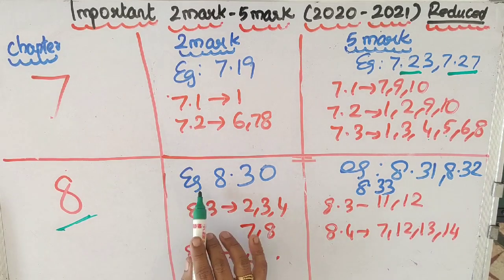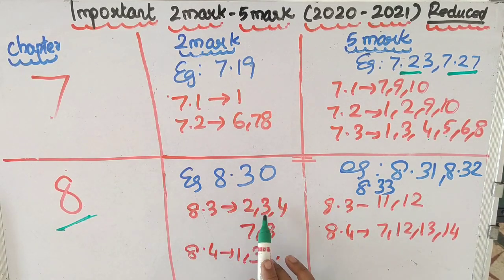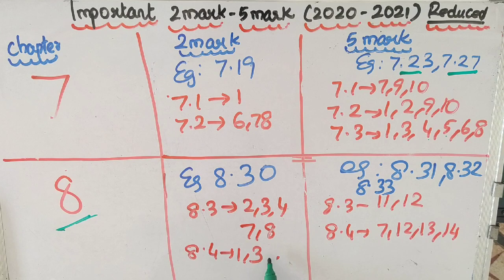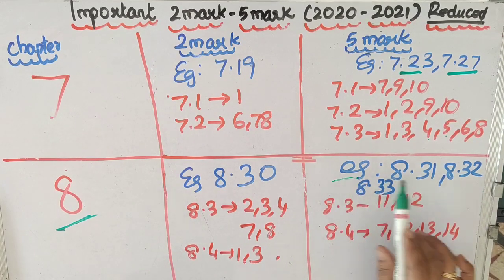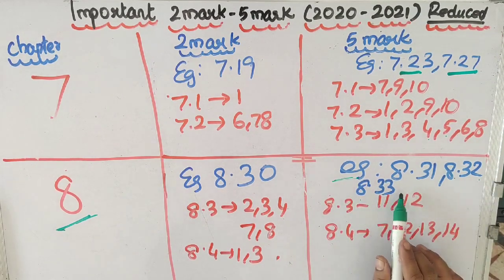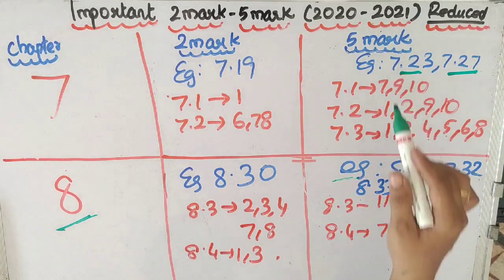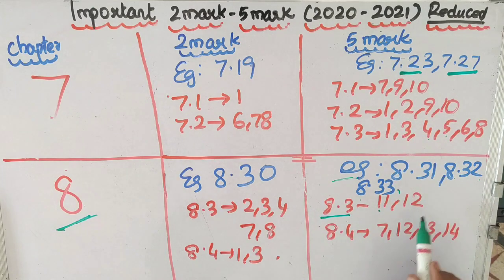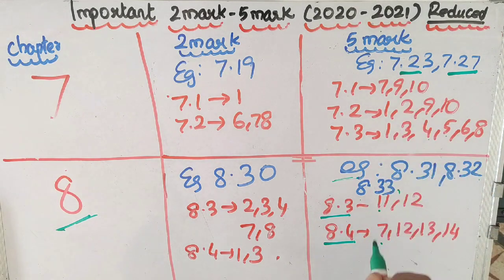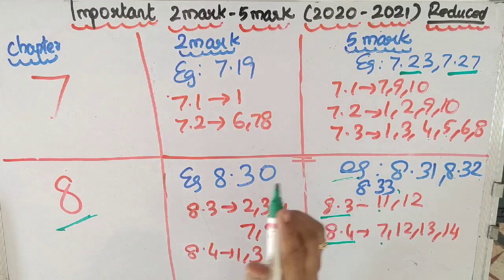In the eighth chapter, for the 2-mark questions, example 8.30 is important. 8.3 exercise questions 2, 3, 4, 7, and 8 are important. 8.4 exercise questions 1 and 3 are important. For the 5-mark questions, examples 8.31, 8.32, and 8.33 are important. 8.3 exercise questions 11 and 12 are important. 8.4 exercise questions 7, 12, 13, and 14 are important.